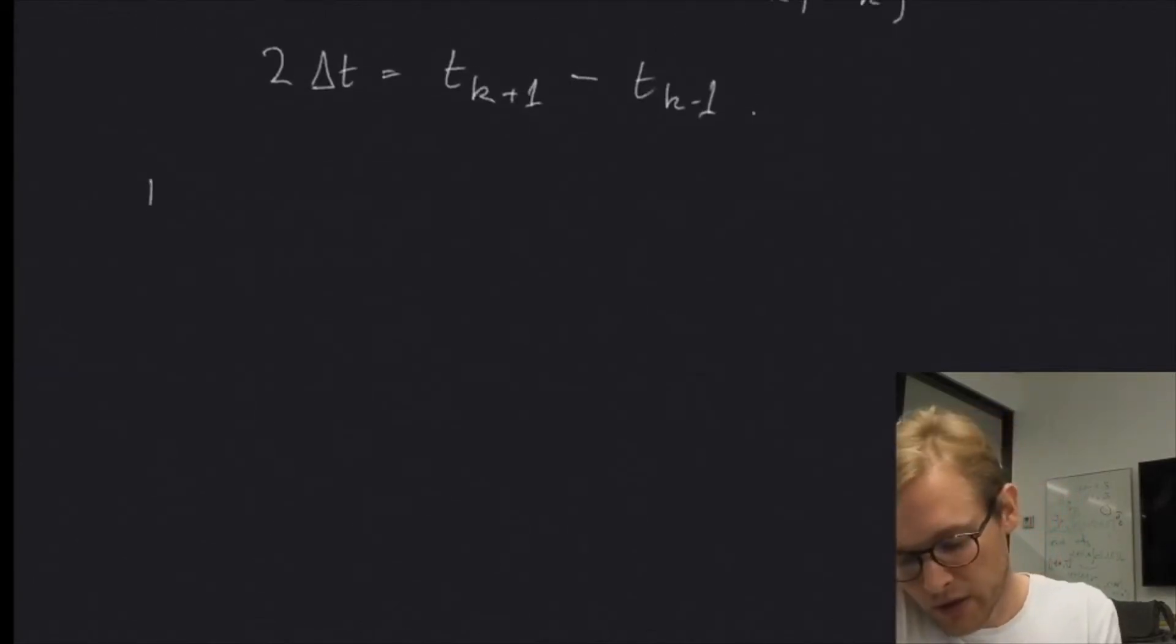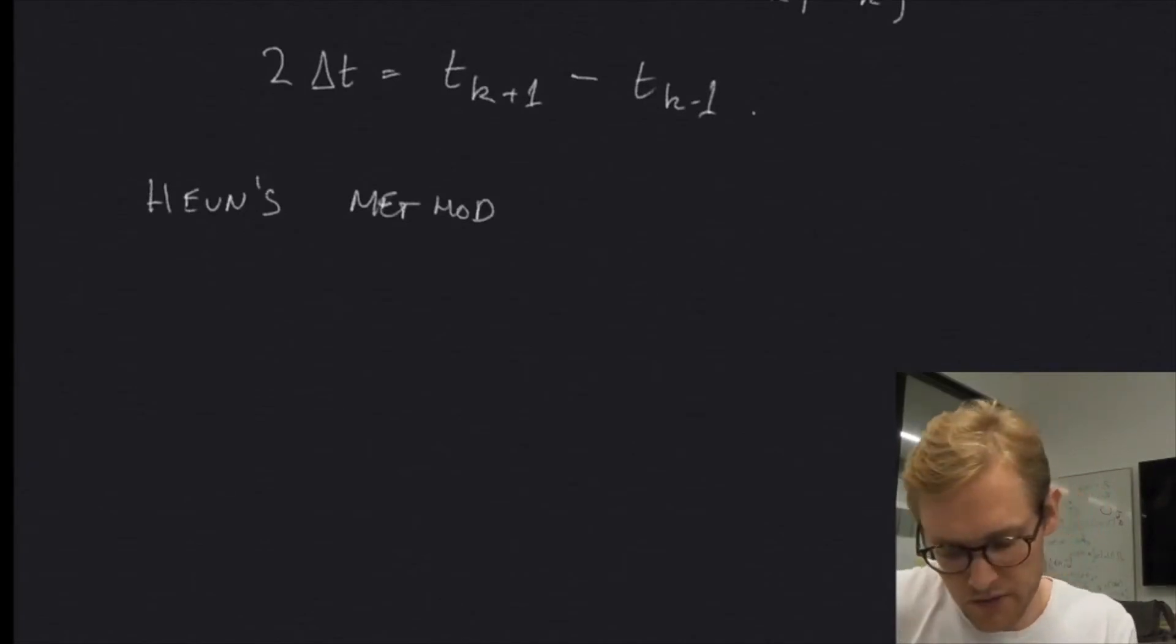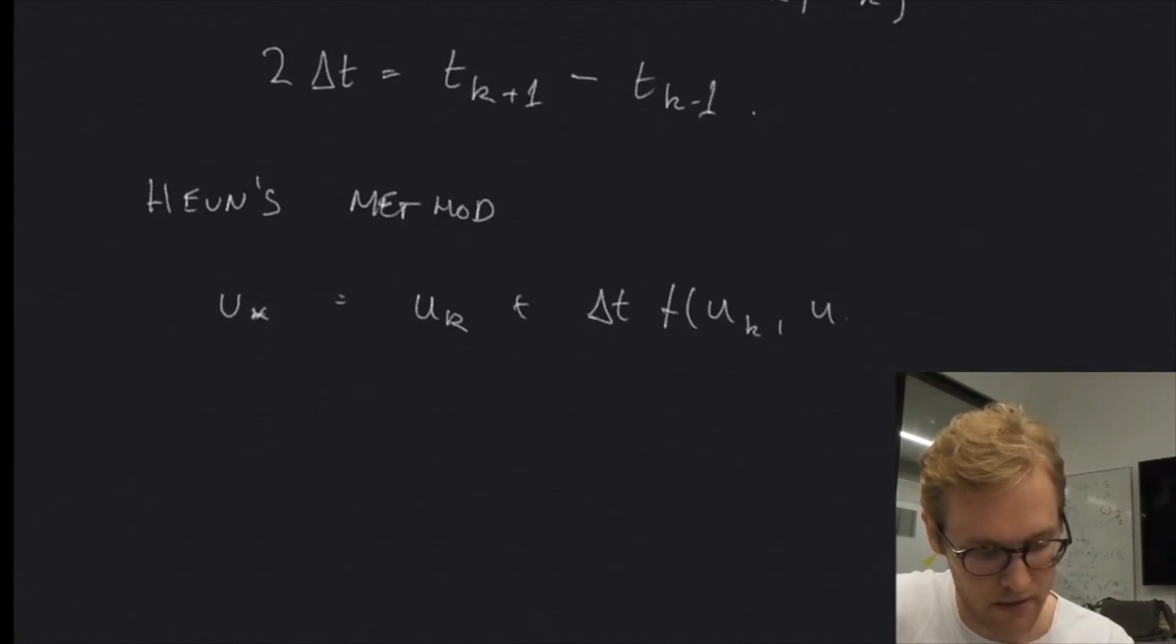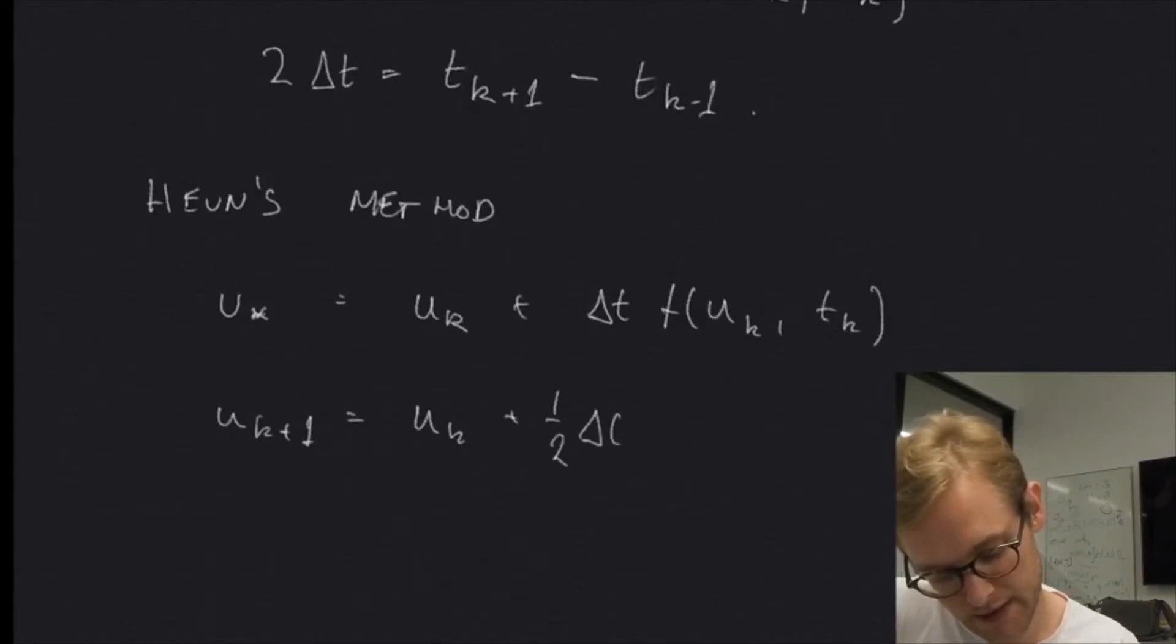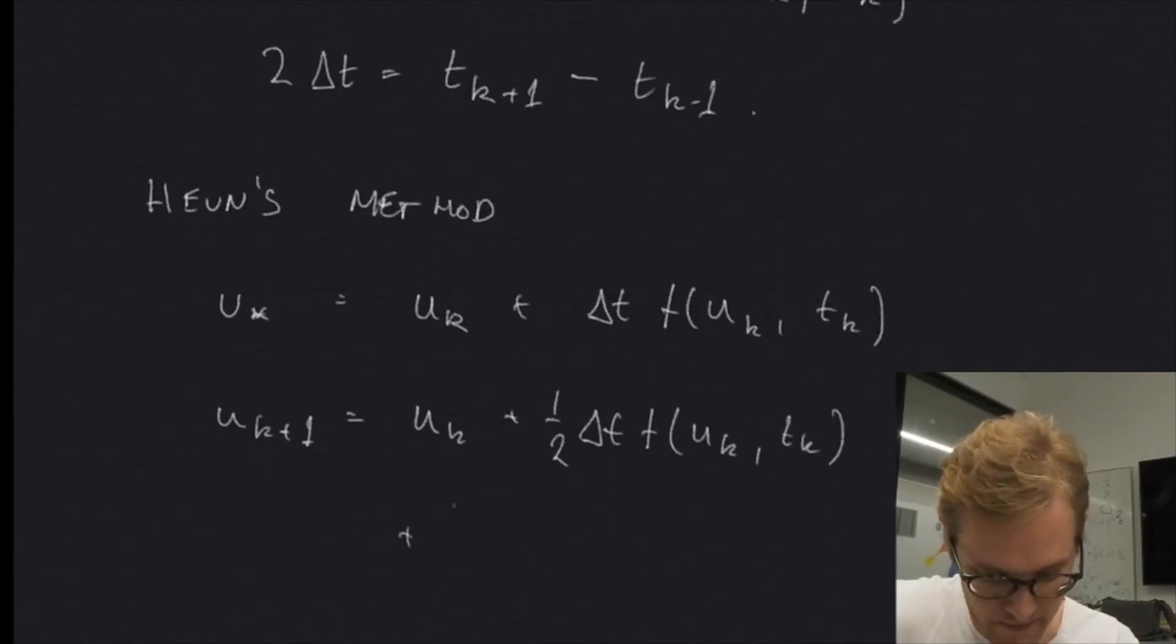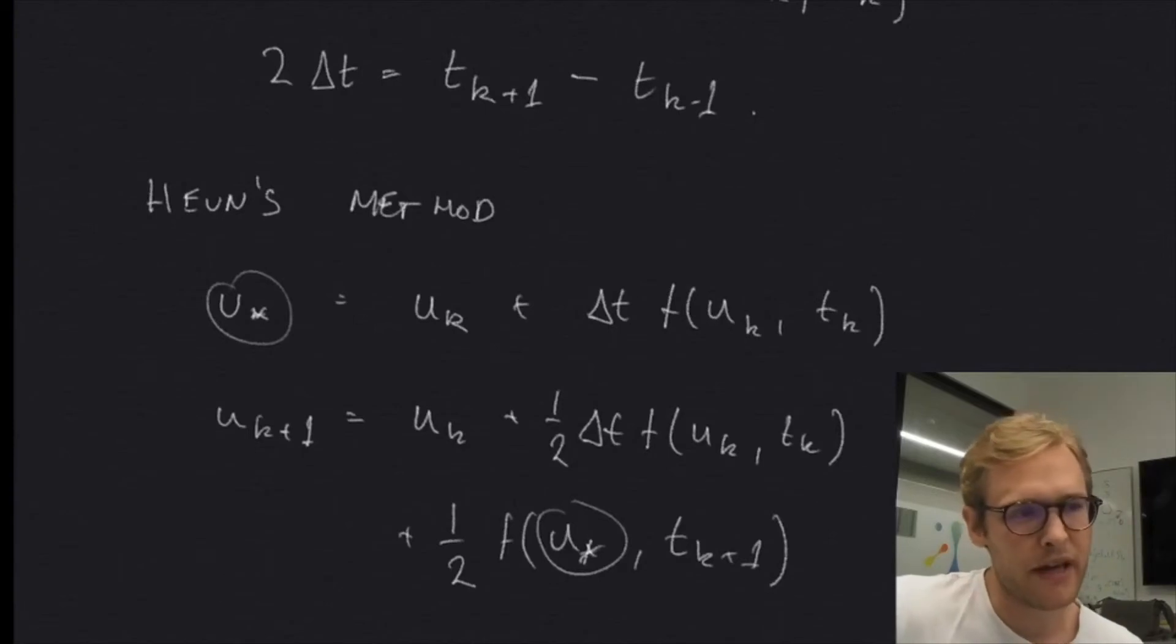We also have something called the Hoynes method, which is a two step procedure. So here we first compute an intermediate step called U star or U temporary or something like that. So we add that from the current U, the current solution point, add to that delta T times F of UK and TK, just like forward Euler, right? And then we compute the next U in the following manner. We start with the UK again, and we add half delta T, multiply it with the same thing, UK TK. We add half of the input function evaluated at this temporary U. This is the same thing as the one up here. And at the next time step. So it's a bit more sophisticated, and it's slightly more accurate, I think.